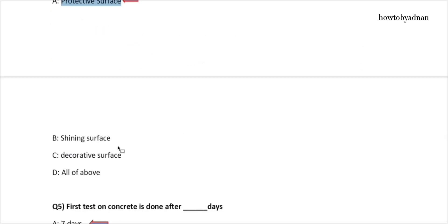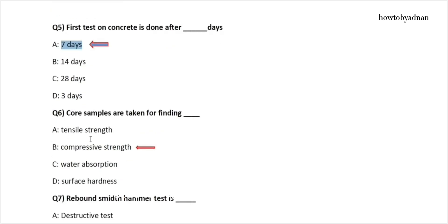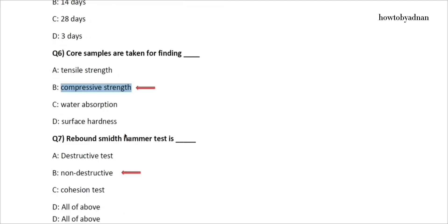Question 5: The first test on concrete is done after how many days? The answer is option A: 7 days. Question 6: Core samples are taken for finding? The answer is option B: Compressive strength. Question 7: The rebound Schmidt hammer test is? The answer is option B: Non-destructive.